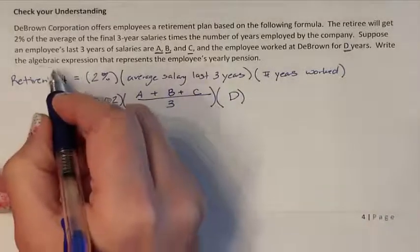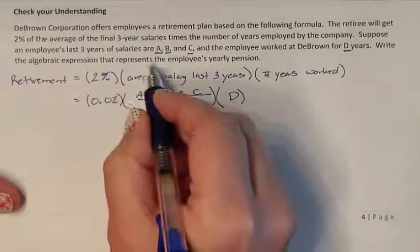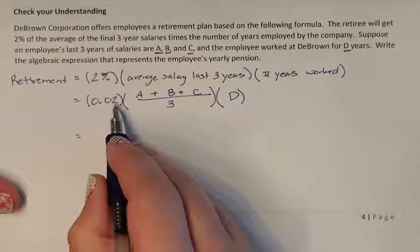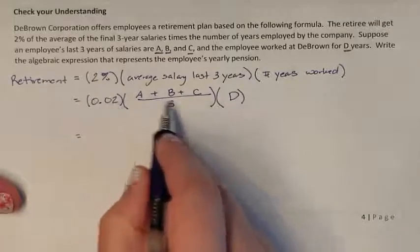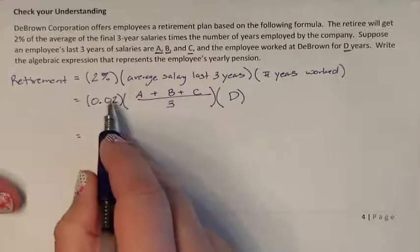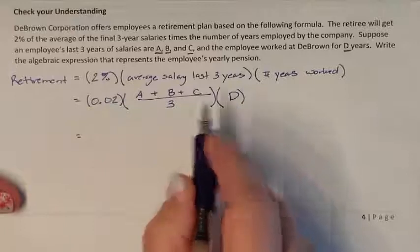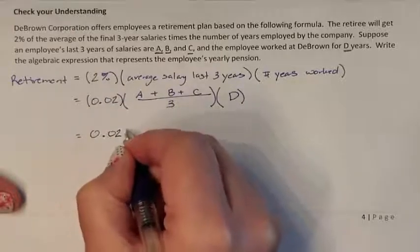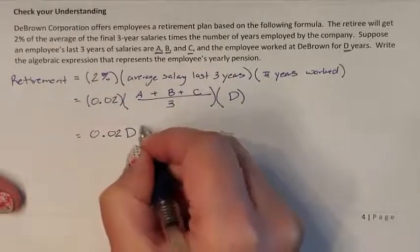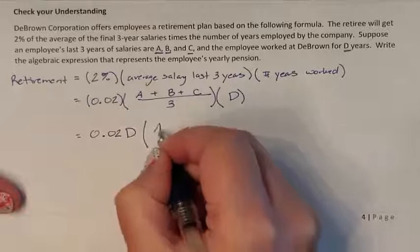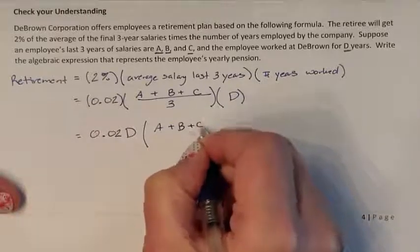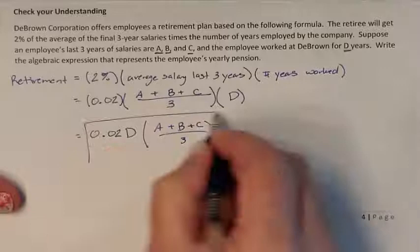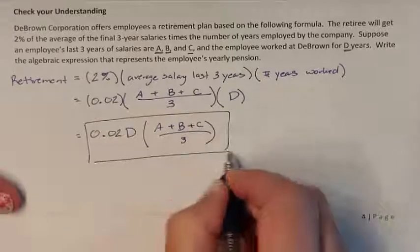It wants us to write the algebraic expression for his yearly pension. So we have 0.02 multiplied by D, multiplied by the fraction (A + B + C) divided by 3. So we have 0.02 × D × ((A + B + C) / 3), and this is his annual pension.